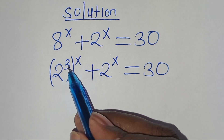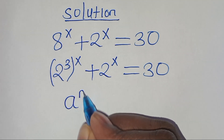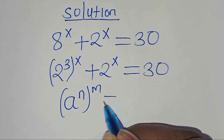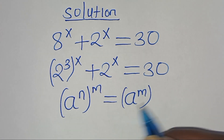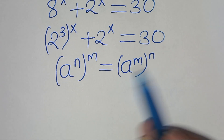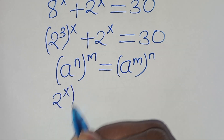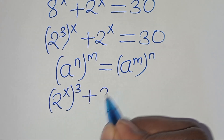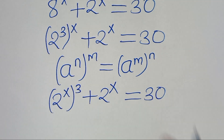So 2 to the power of 3 raised to the power of x is in the form of a to the power of n raised to the power of m, which we can express as a to the power of m raised to the power of n. Let's apply this exponent property so that we have 2 to the power of x raised to the power of 3, then plus 2 to the power of x. This is equal to 30.